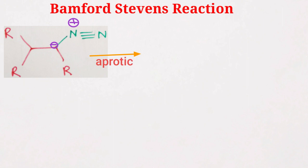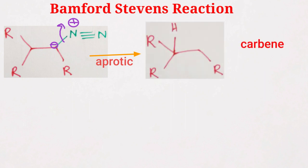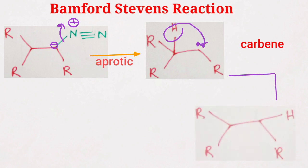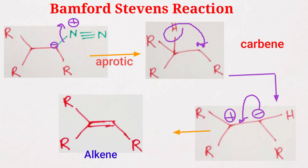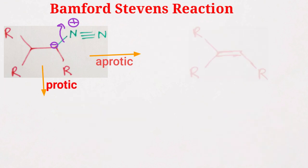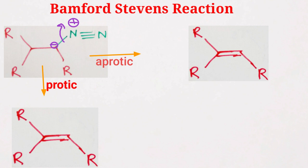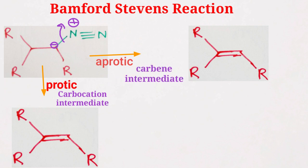On the other hand, if we use an aprotic solvent, there is no scope for protonation of this negative charge, so nitrogen just leaves as nitrogen gas and it will give a carbene-like structure. Finally, a hydride migration occurs, driven by the negative charge, to get this alkene. So in both cases we get an alkene, but in one case it goes through a carbocation intermediate and in the other case it goes through a carbene intermediate. This is the mechanism of the Bamford-Stevens reaction.